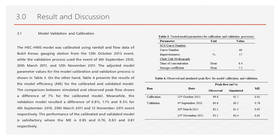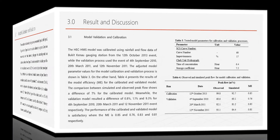The comparison between simulated and observed models shows a difference of 7% for the calibrated model, while the validation model resulted in differences of 0.8%, 1.1%, and 9.2% for the 4th September 2010, 20th March 2011, and 12th November 2011 events, respectively. The performance of the calibrated and validated model is satisfactory, where the ME values are 0.85 and 0.76, 0.83 and 0.81, respectively.